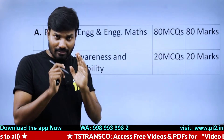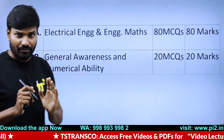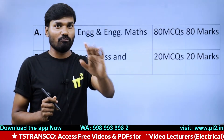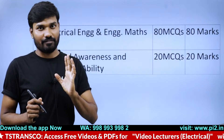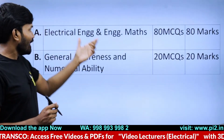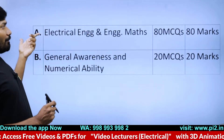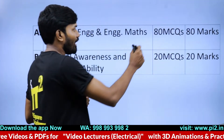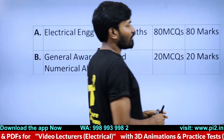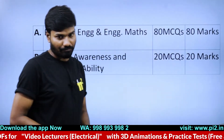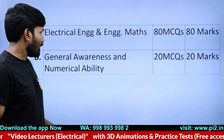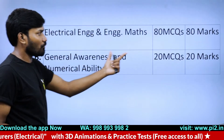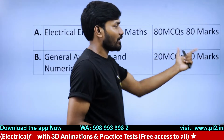I will discuss everything, no worries. This is Section A, in which you have 80 MCQs for 80 marks. And Section B is general awareness and numerical ability — 20 questions for 20 marks.